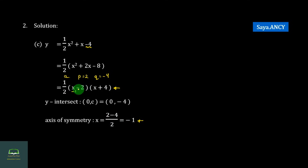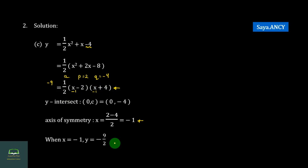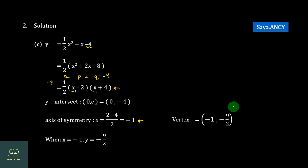Minus 1 minus 2, then minus 3. Then minus 1 equals 4. Minus 2 equals minus 3, equals minus 9, and minus 2.